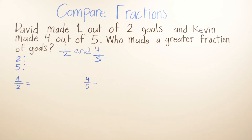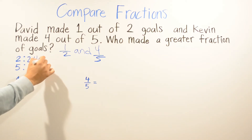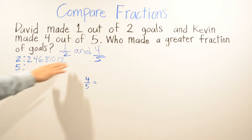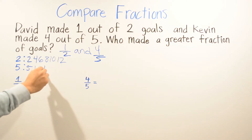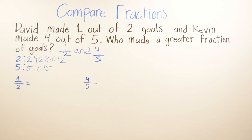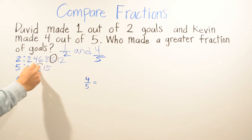We need to find the least common multiple to find a common denominator for one half and four fifths. Starting with two: two, four, six, eight, ten, twelve. Then with five: five, ten, fifteen. I can see right away that the least common multiple is ten — it appears in both lists.